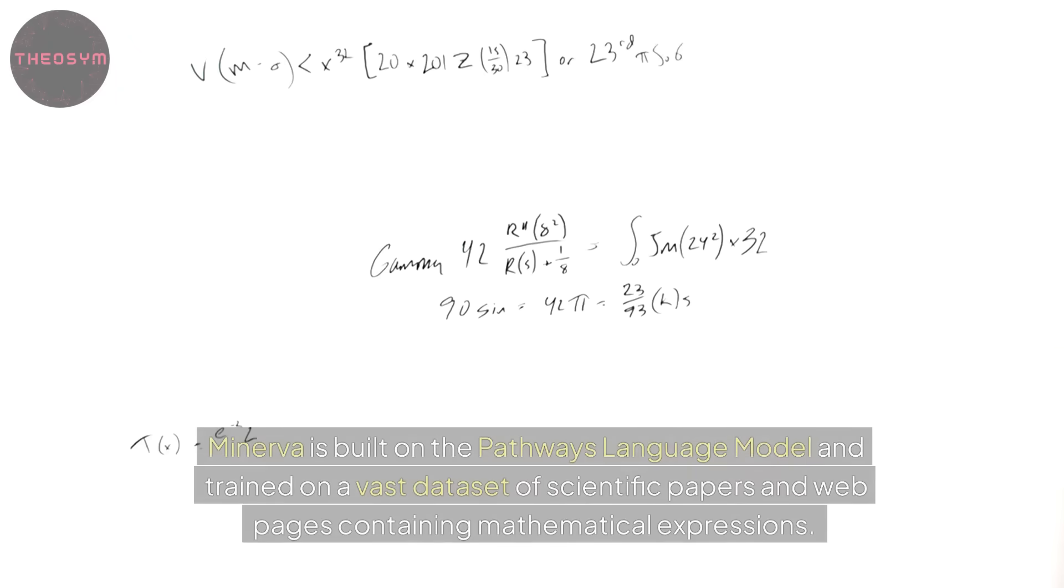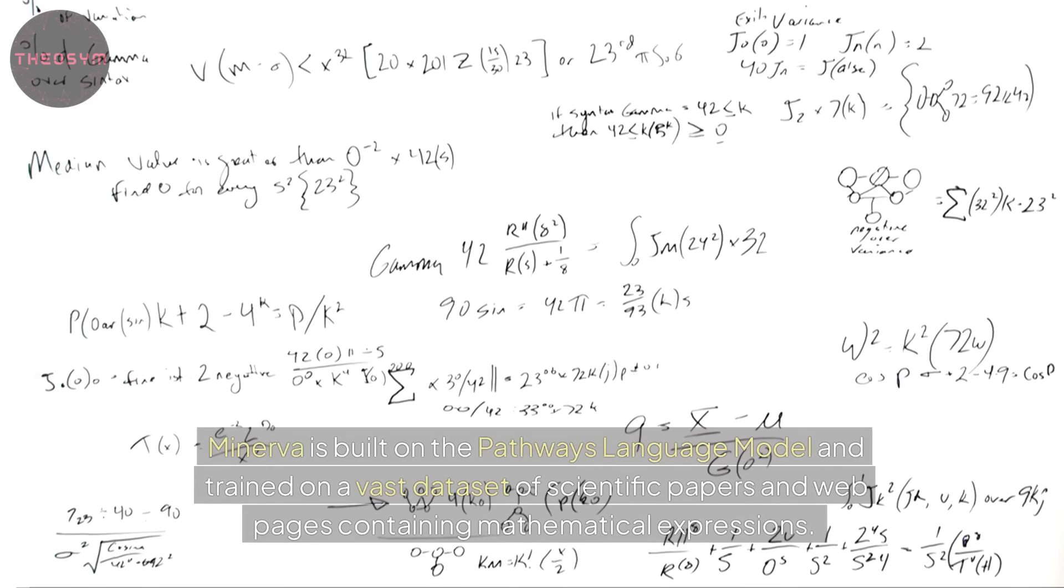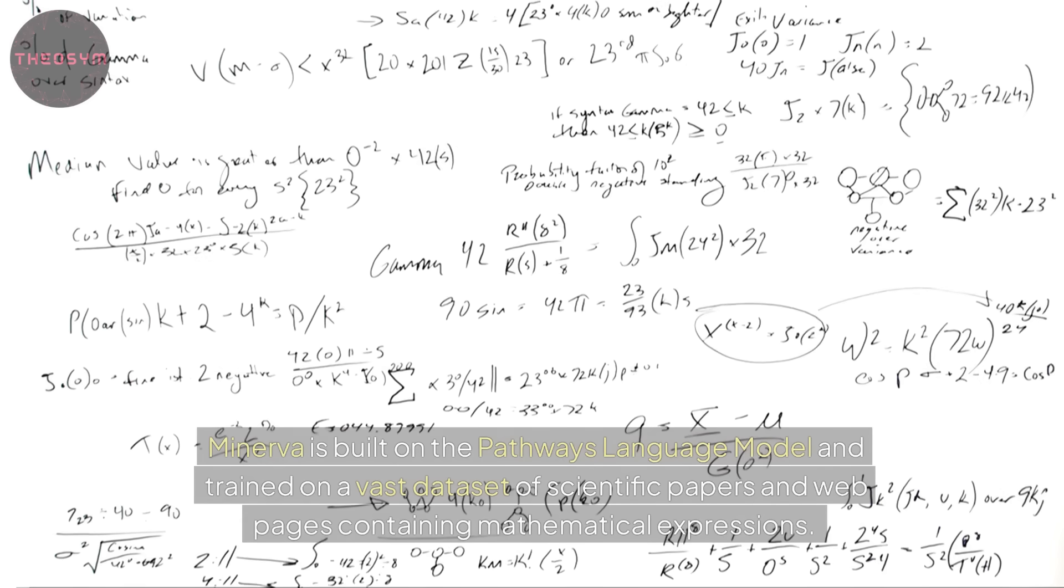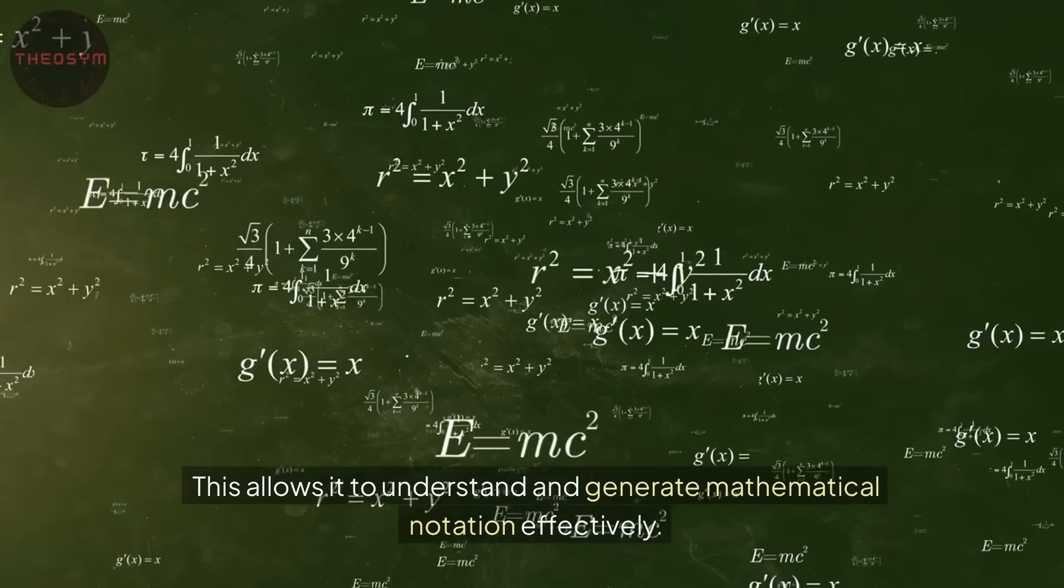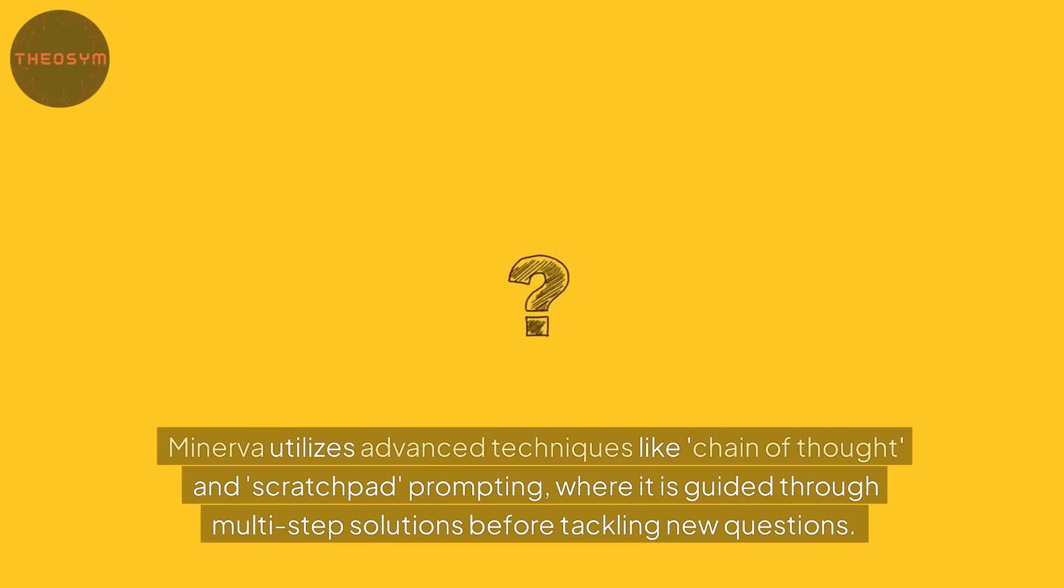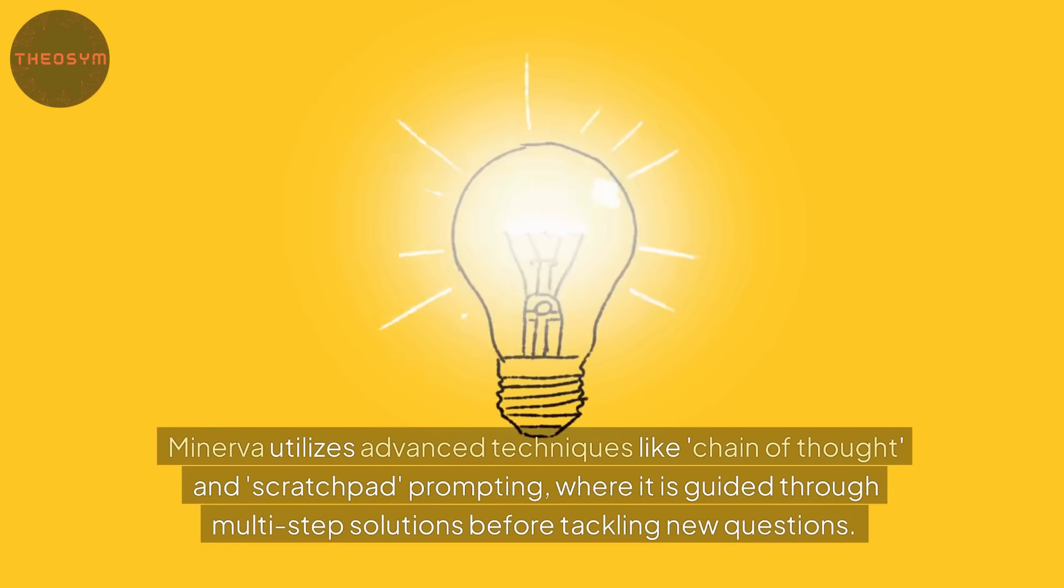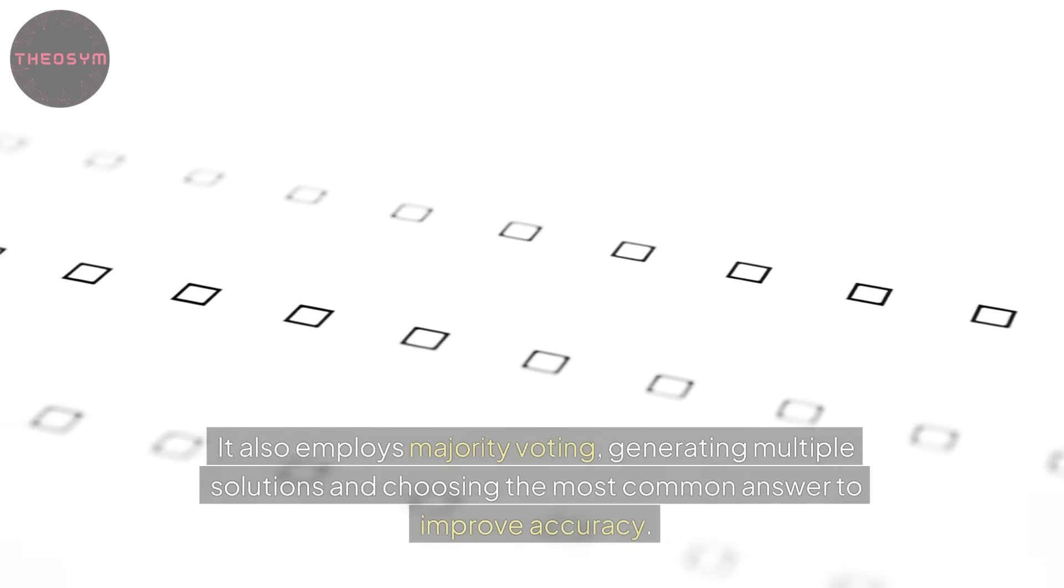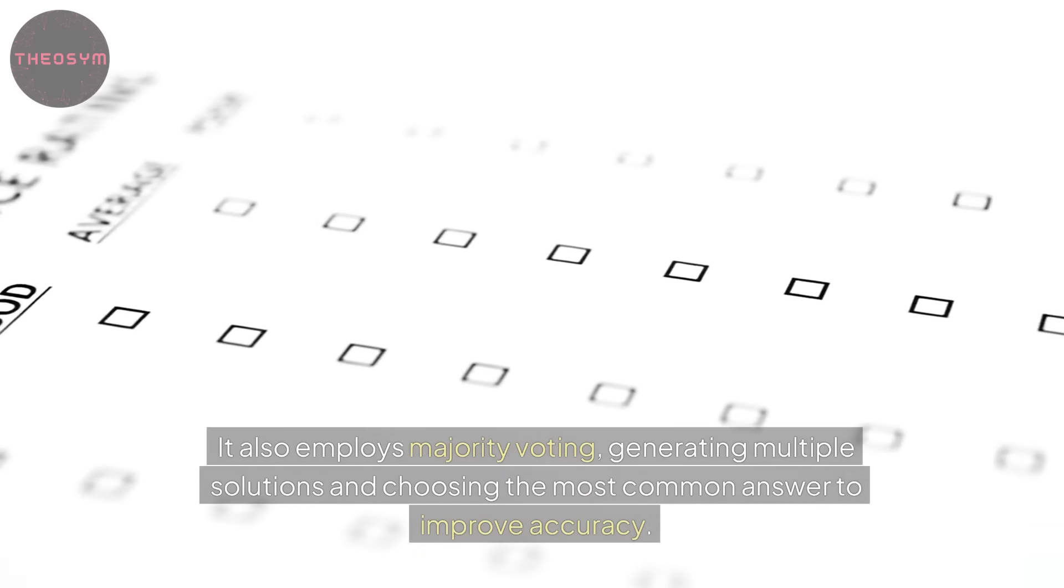Minerva is built on the Pathways language model and trained on a vast dataset of scientific papers and web pages containing mathematical expressions. This allows it to understand and generate mathematical notation effectively. Minerva utilizes advanced techniques like chain-of-thought and scratchpad prompting, where it is guided through multi-step solutions before tackling new questions. It also employs majority voting, generating multiple solutions and choosing the most common answer to improve accuracy.